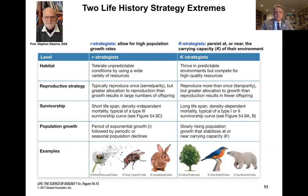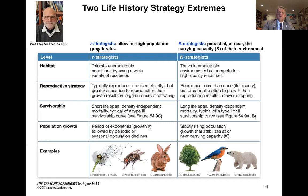There are two extremes of life history strategies, first articulated by Yale EEB's Professor Steven Stern. R-strategists allow for high population growth rates. K-strategists persist at or near the carrying capacity of their environment. R-strategists maintain high population growth rates, while K-strategists have a lower growth rate but exist right near the carrying capacity.